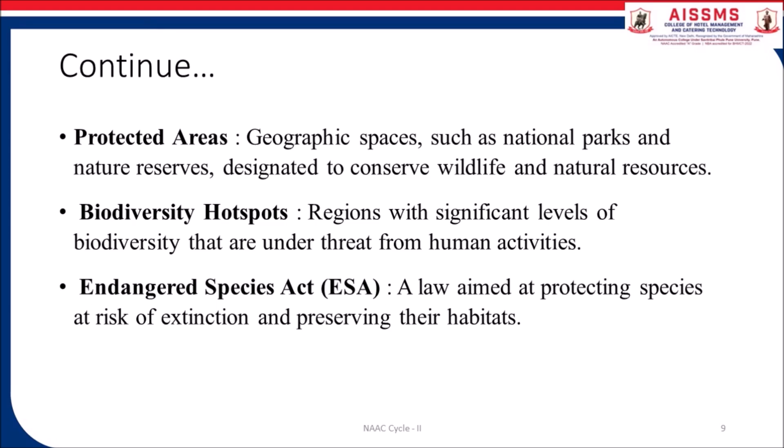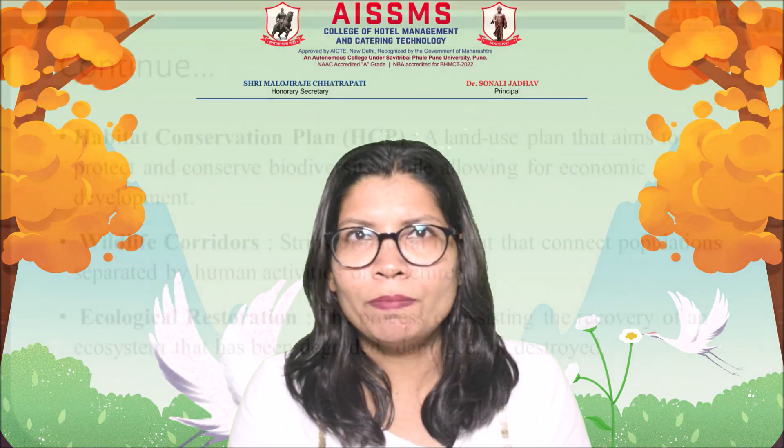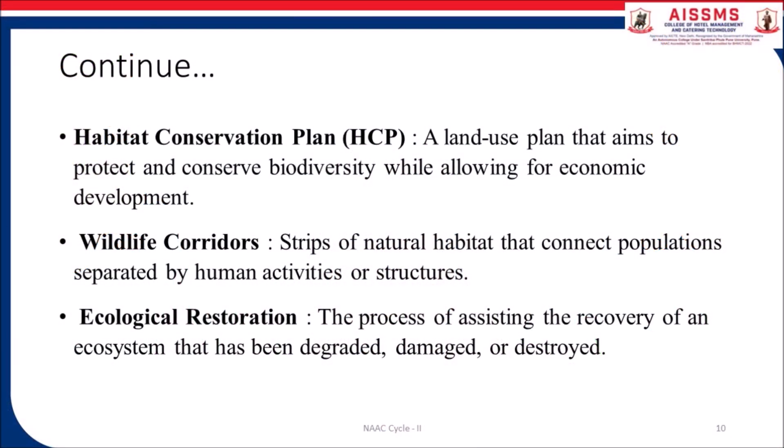Endangered species: a species at risk of extinction requiring protection of the species and preservation of its habitat. Habitat Conservation Plan (HCP): a land use plan that aims to protect and conserve biodiversity while allowing for economic development. Wildlife corridors: strips of natural habitat that connect populations separated by human activities or structures.